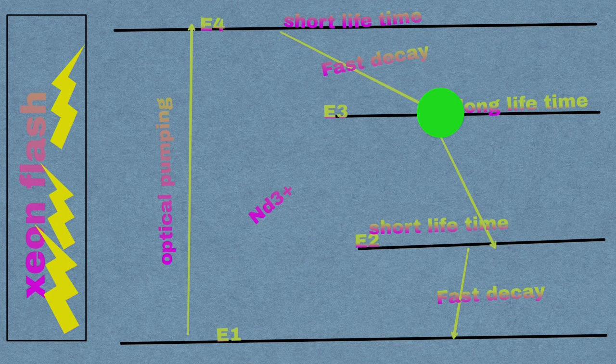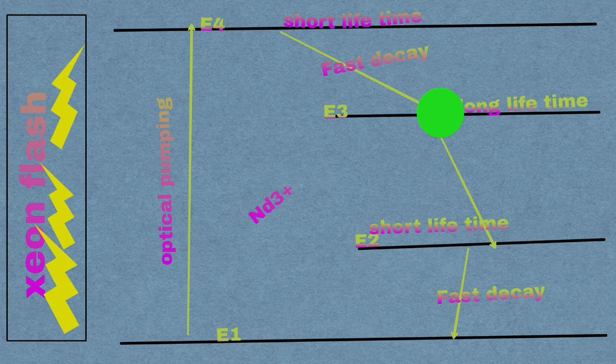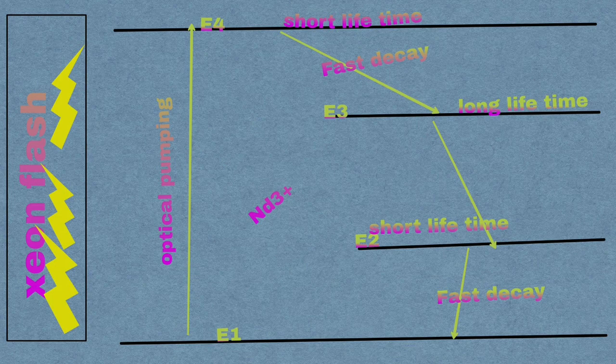So population inversion takes place between metastable E3 and E2 state. The Nd3+ ions are then de-excited into ground E1 state through fast decay. Hence pulsed form of laser beam is emitted during transition from E2 to E1.